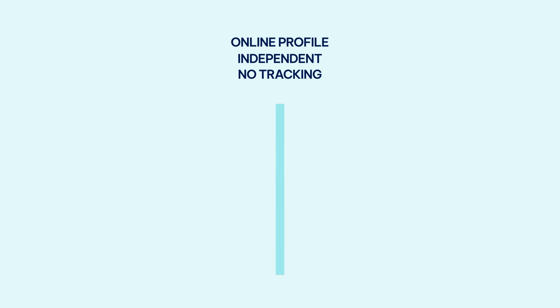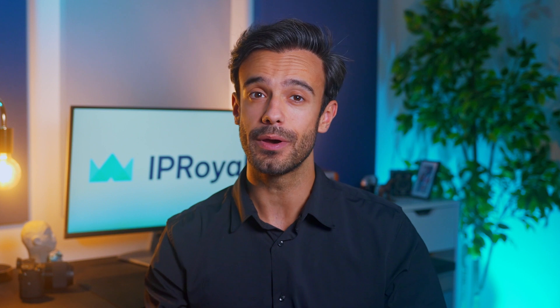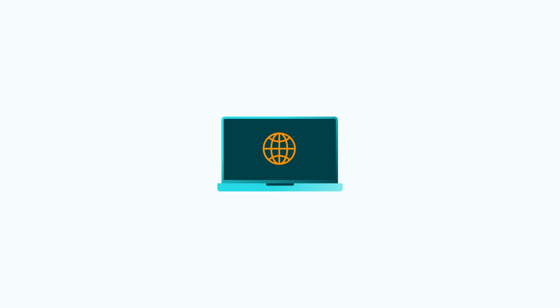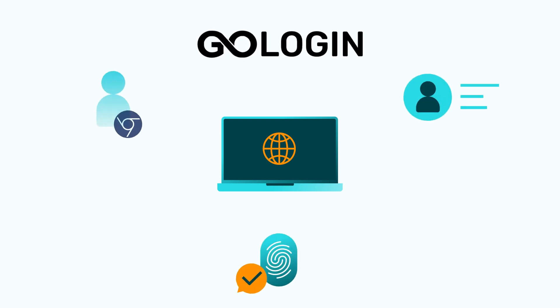To make your online profiles fully independent and impossible to trace back to your device, you need two things: an anti-detect browser and reliable proxy servers. An anti-detect browser like GoLogin allows you to create custom browser profiles and fingerprints. You can run all of them from a single computer, which is incredibly cost efficient. Combine these browser profiles with reliable residential proxies like ours and you have a bulletproof multi-accounting solution.